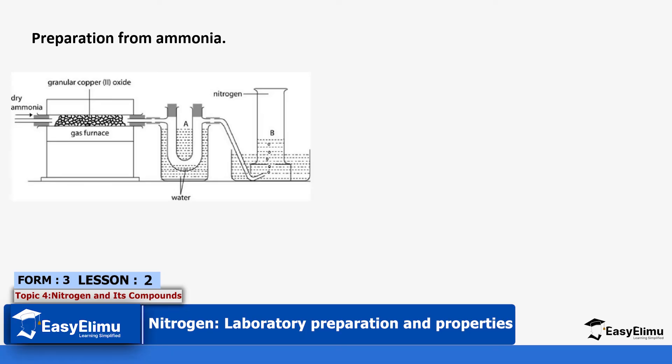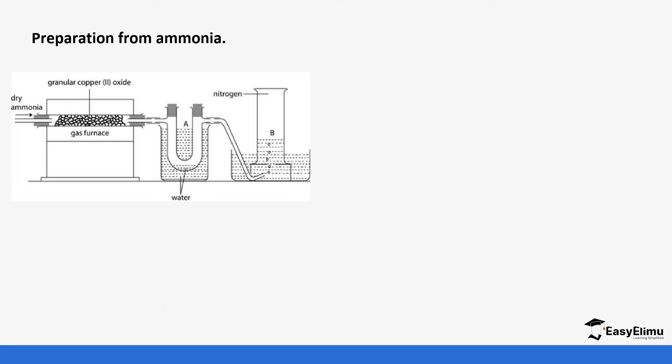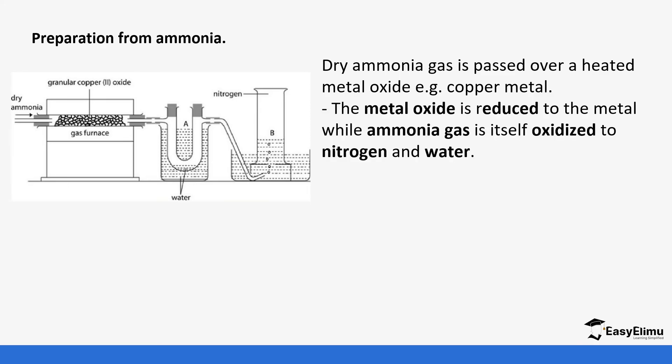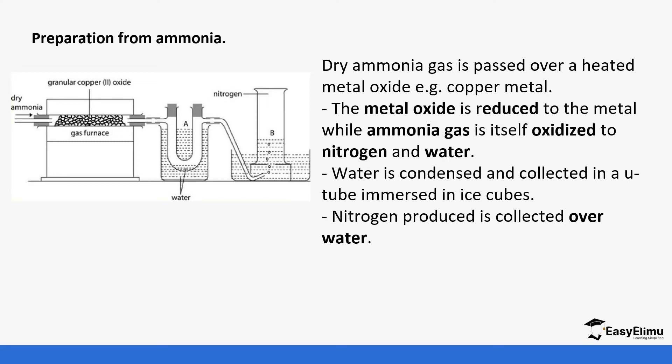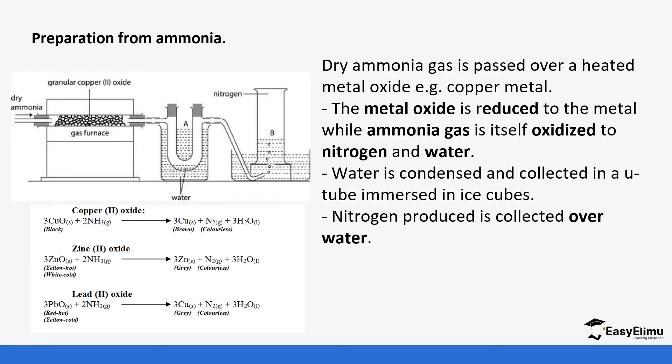It can also be prepared from ammonia, where the reaction of ammonia with an oxide. In this experiment you can see dry ammonia is passed through a gas furnace containing copper 2 oxide that is heated. Ammonia reduces copper 2 oxide and nitrogen gas is produced. The metal oxide is reduced to metal while ammonia gas is oxidized to nitrogen and water. Water is condensed and collected in the U-tube. You can see it is immersed in ice water or ice cubes, and nitrogen that is produced is collected over water.